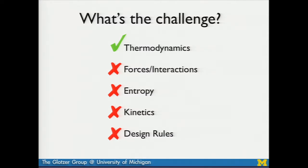The system can get stuck in all sorts of metastable traps — sometimes those traps themselves are interesting structures. We understand something about the thermodynamics, but we can't predict for any given building block what structure it will self-assemble into. We can't start with a target structure for a particular property and say what kind of building block to make. We know the kinds of forces driving assembly — van der Waals interactions, electrostatics, solvophobic and solvophilic interactions, and entropy — but not the specific strength of all these forces for all building blocks in all situations.